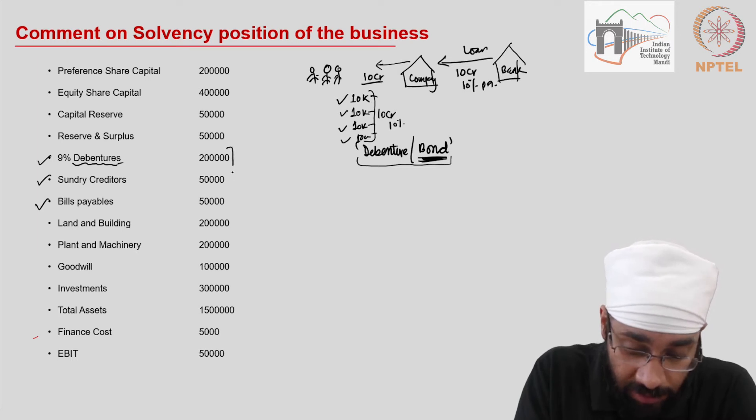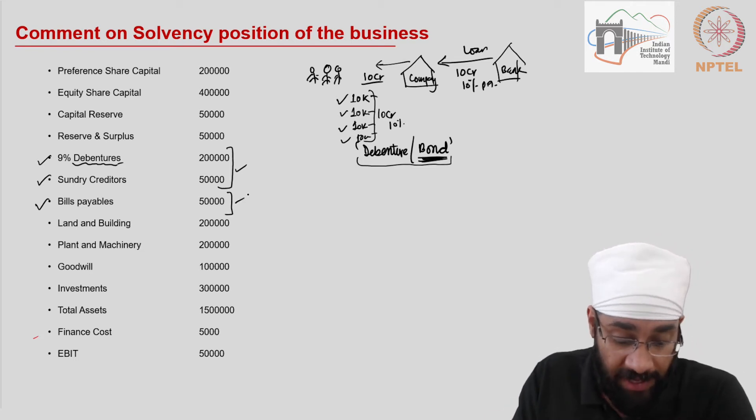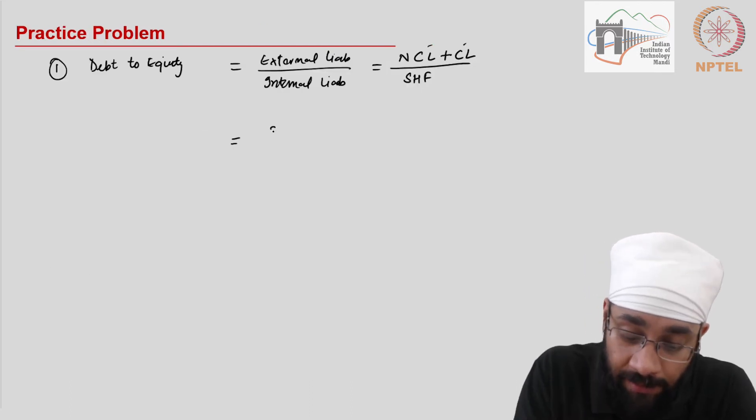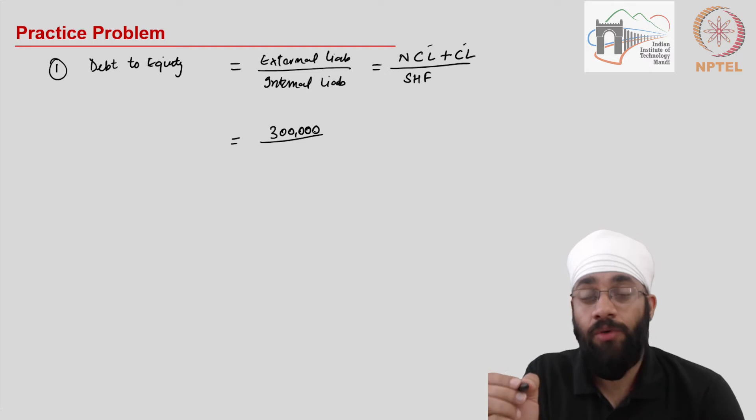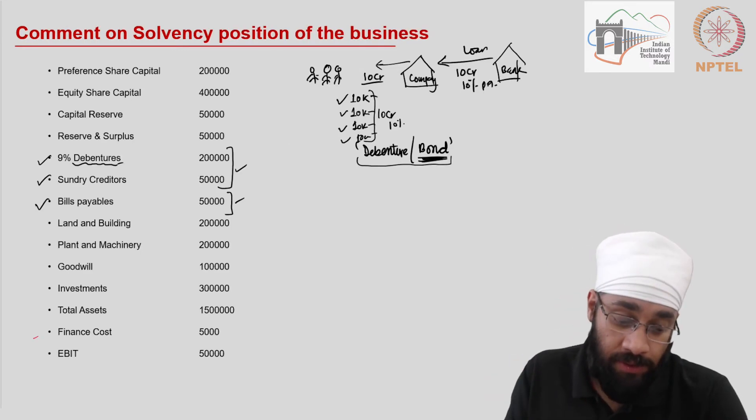So that is what debenture is—it's essentially a loan taken by the company. Non-current liabilities are 250,000 and current liabilities are 50,000. Total 300,000 is the external liabilities. The internal liabilities are going to include the capital and reserve and surpluses.